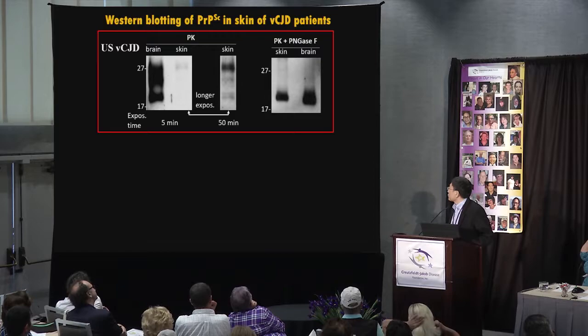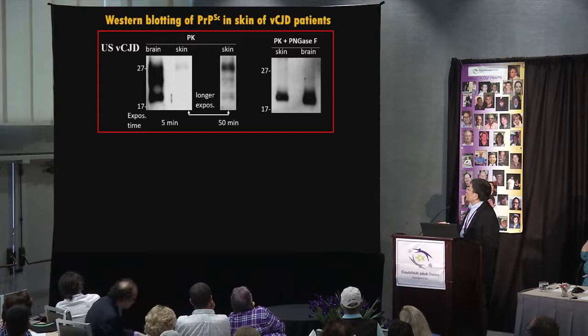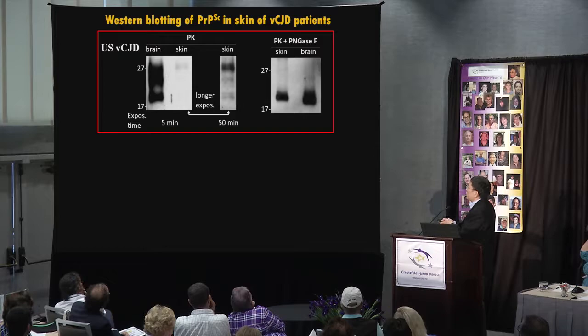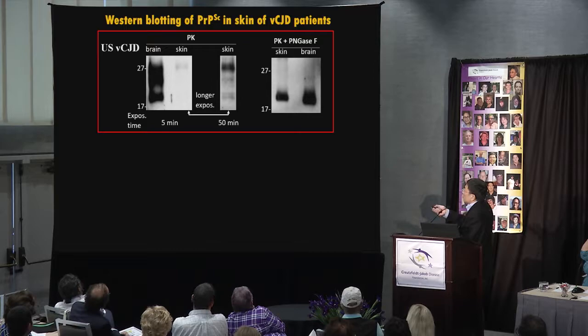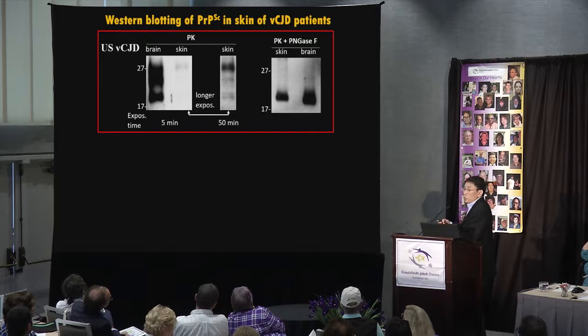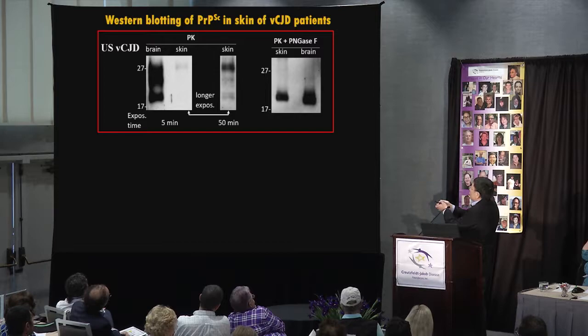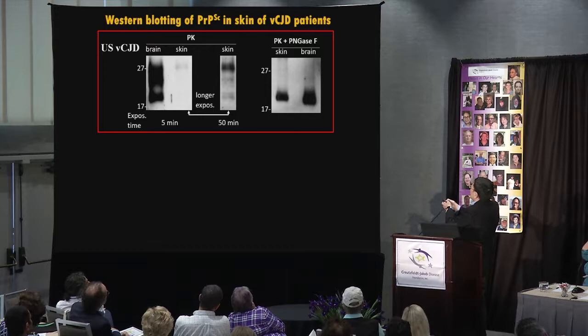First, I want to show the Western blot analysis for CJD skin samples — here showing the US variant CJD case. After enrichment, we detected PRP in the skin by Western blot. We can detect PRP in the skin, but compared to the brain samples from this case it is much, much lower. Only after long exposure of the films can you see the three PRP bands. After removing the glycans — the sugars from the protein — the three bands become one band, so we can see it much better. Compared to the brain samples, it is very convincing.